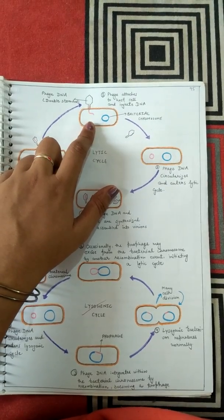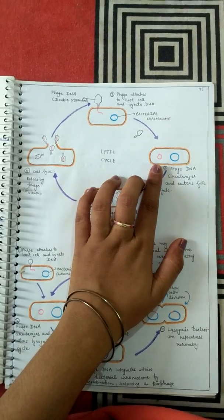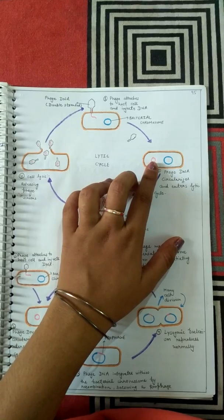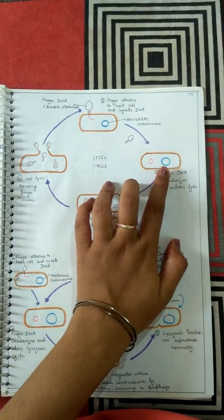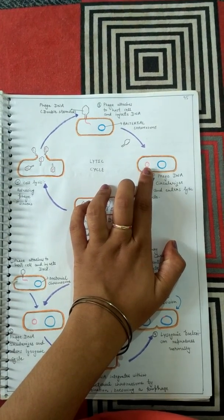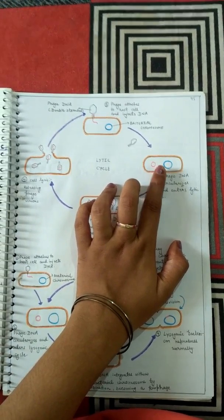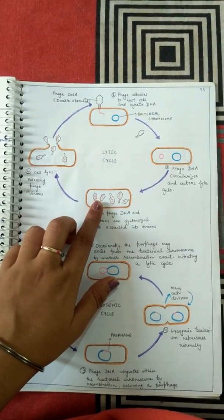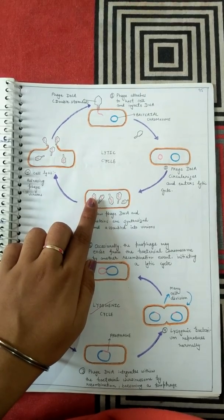In the second step, the bacteriophage DNA circularizes itself inside the bacterial cell. You can see the bacterial chromosome separately, and the bacteriophage DNA circularizes inside the host cell.